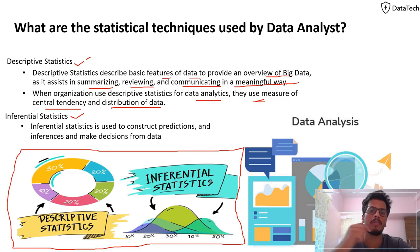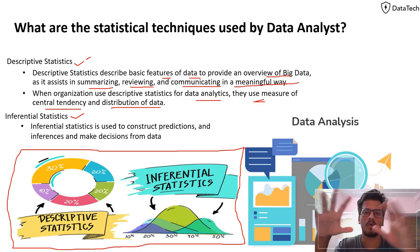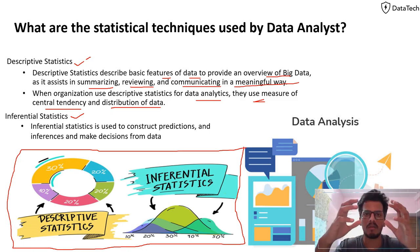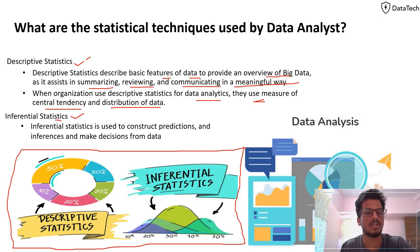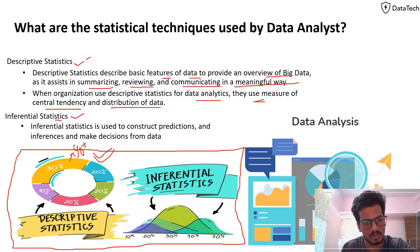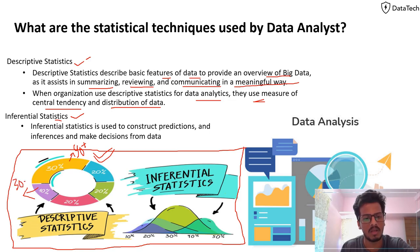When organizations use descriptive statistics in data analysis, they use measures of central tendency and distribution of data. Measures of central tendency are mean, median, and mode. Mean is the sum of all observations divided by the total number of observations. Median is the middle value of observations arranged in ascending or descending order. Mode is the value with the maximum number of occurrences.